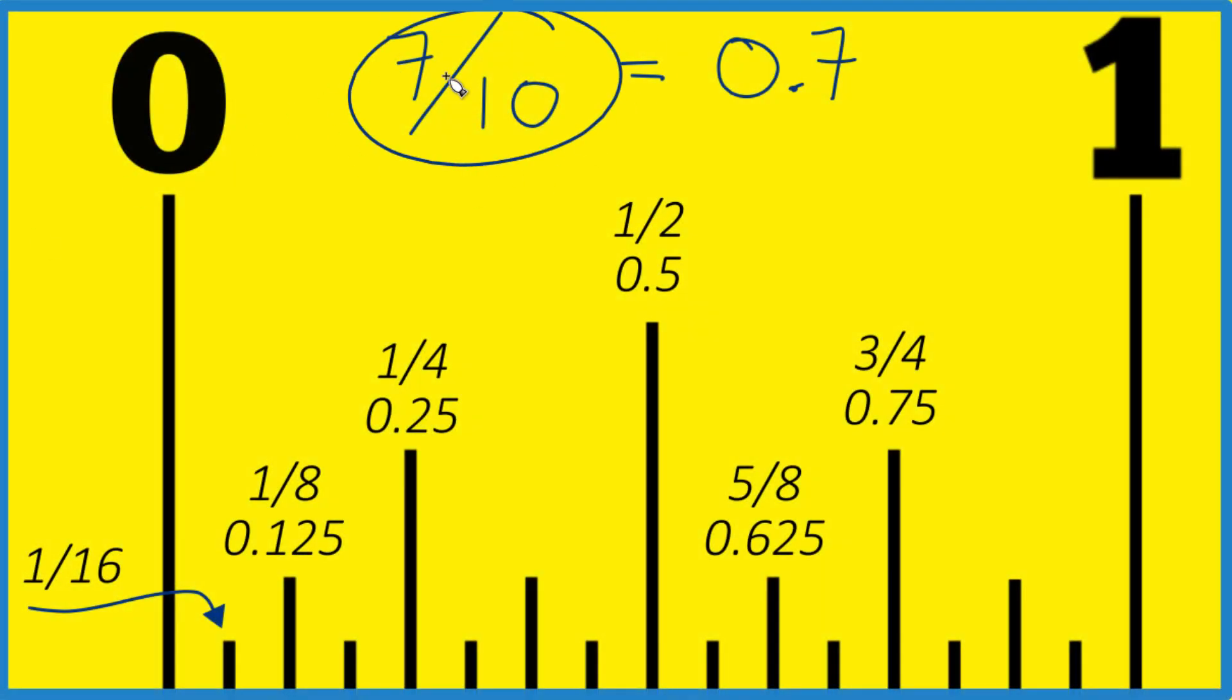Let's find 7 tenths of an inch on this ruler or tape measure. This is our traditional ruler or tape measure with the fractional divisions here. 7 divided by 10, that's 0.7 as a decimal. So that's what we're going to be looking for.